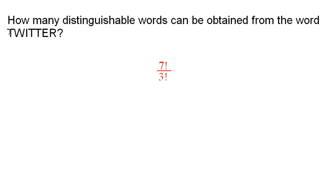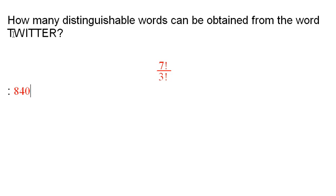Each permutation of the t's is indistinguishable from any other, because every t looks the same. So we have to take 7 factorial divided by 3 factorial, and that equals 840 ways of getting distinctly different words from these letters.